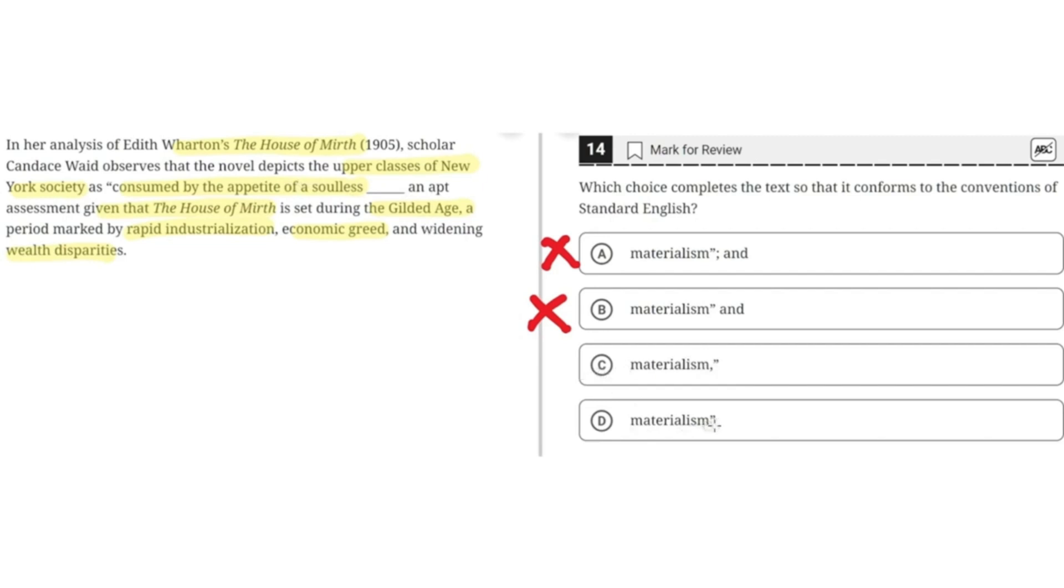D, materialism, no punctuation. This isn't correct because there needs to be some sort of punctuation to separate the independent clause from the supplementary phrase. It would make sense to say consumed by the appetite of a soulless materialism, an apt assessment given that. There needs to be some sort of boundary between this quotation and the rest of the sentence. So D is incorrect, and the correct answer is C.